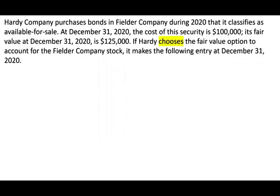The best way to illustrate this is to work an example. Hardee Company purchases a bond in Fiddler's Company during 2020 and classifies it as available for sale. At December 31st, the cost of this security is $100,000 — that's how much they paid. Its Fair Value at December 31st, 2020 is $125,000, meaning they have a gain of $25,000 on this specific instrument. If Hardee chooses the Fair Value option to account for Fiddler Company, they have to write the investment up $25,000.